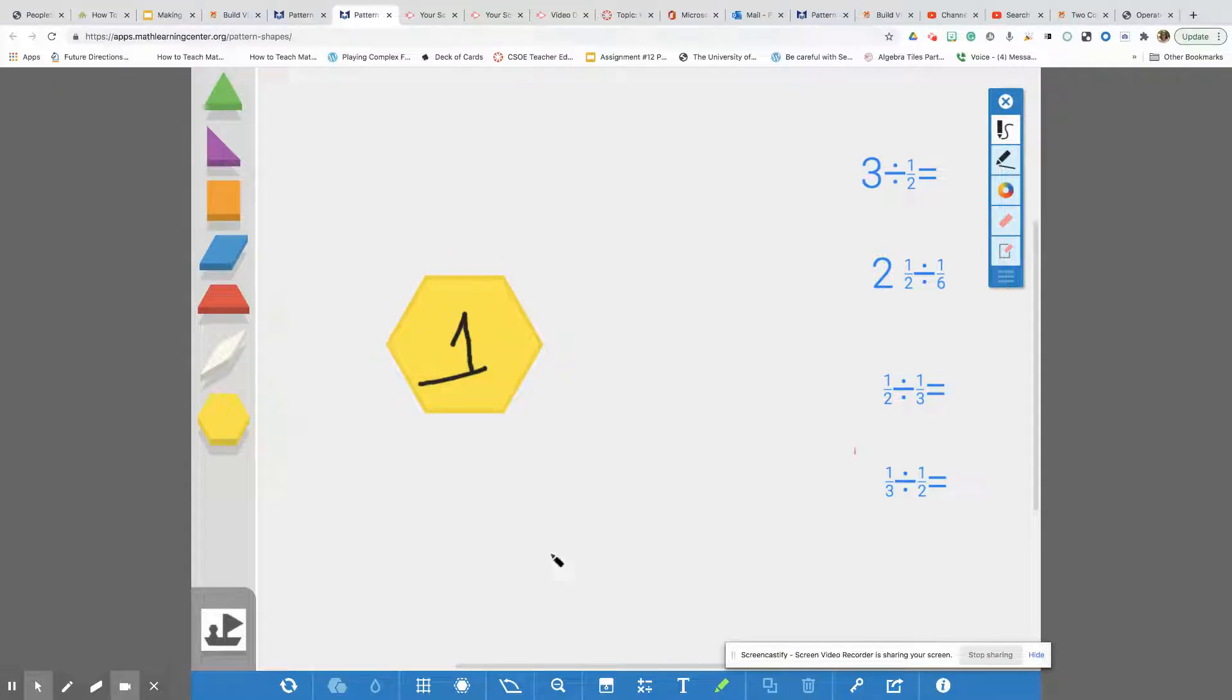So if this is our whole unit, let's try and explore some other pattern blocks to see what is the relationship to the hexagon. So let's start with this red trapezoid. See how many red trapezoids we can fit inside of our hexagon. I can flip it around. So what are you noticing? That's right. We can fit two trapezoids inside the hexagon.